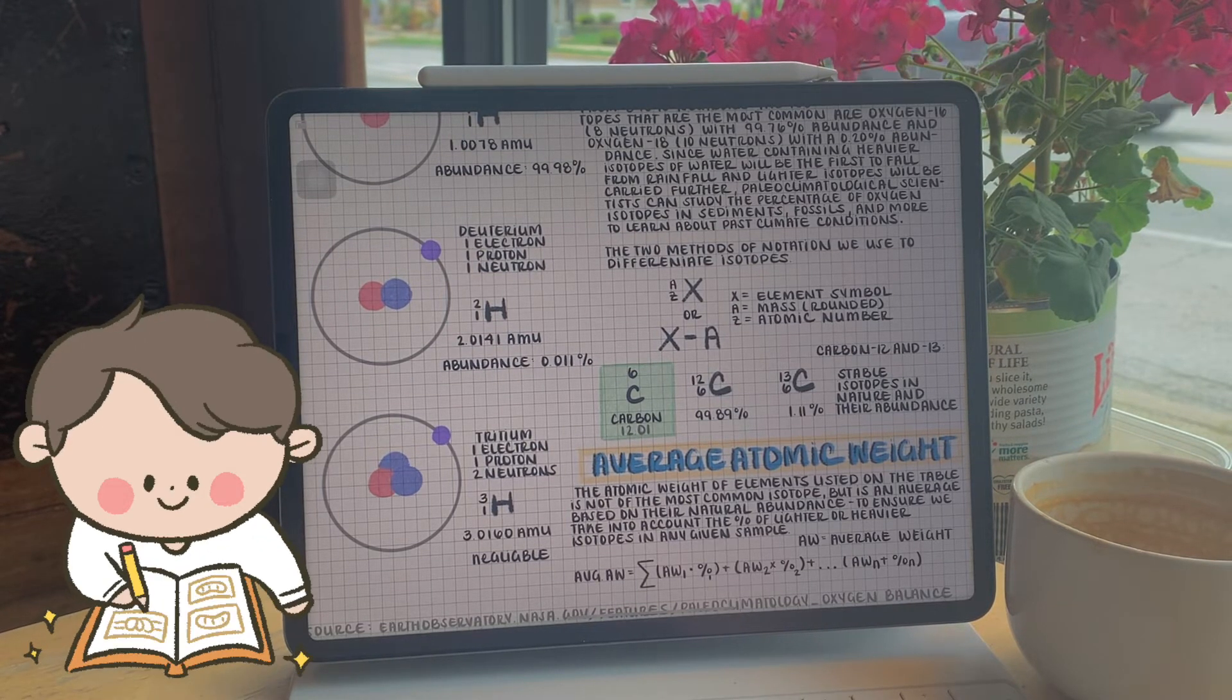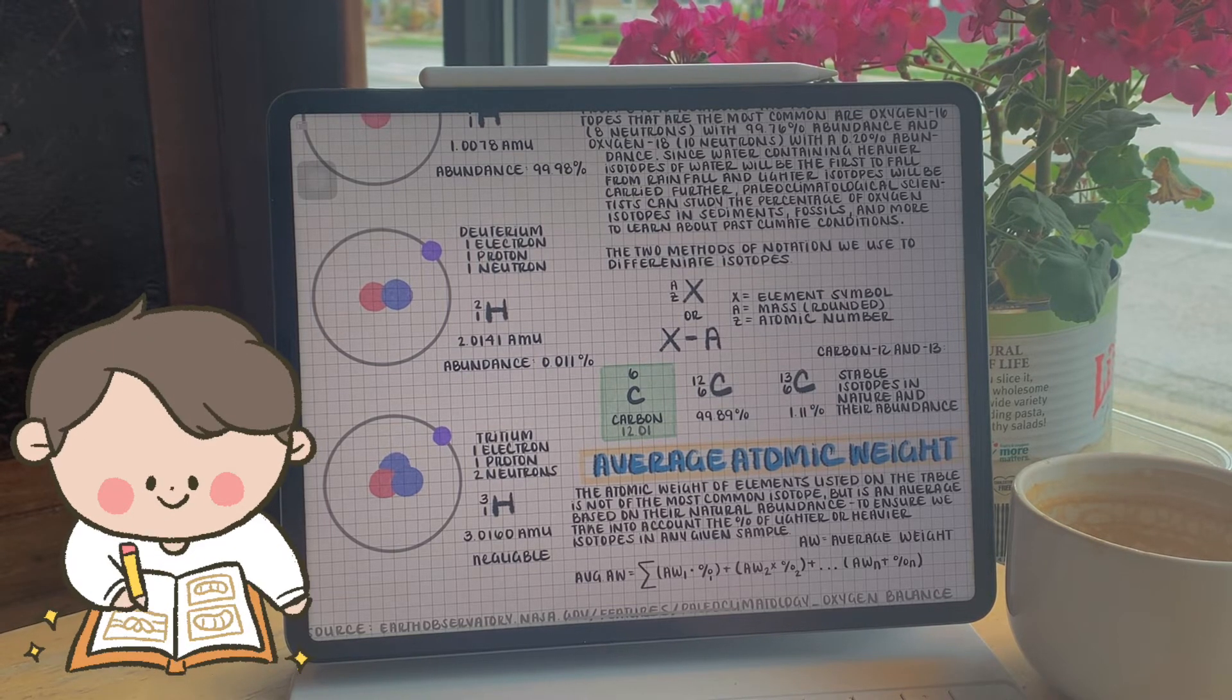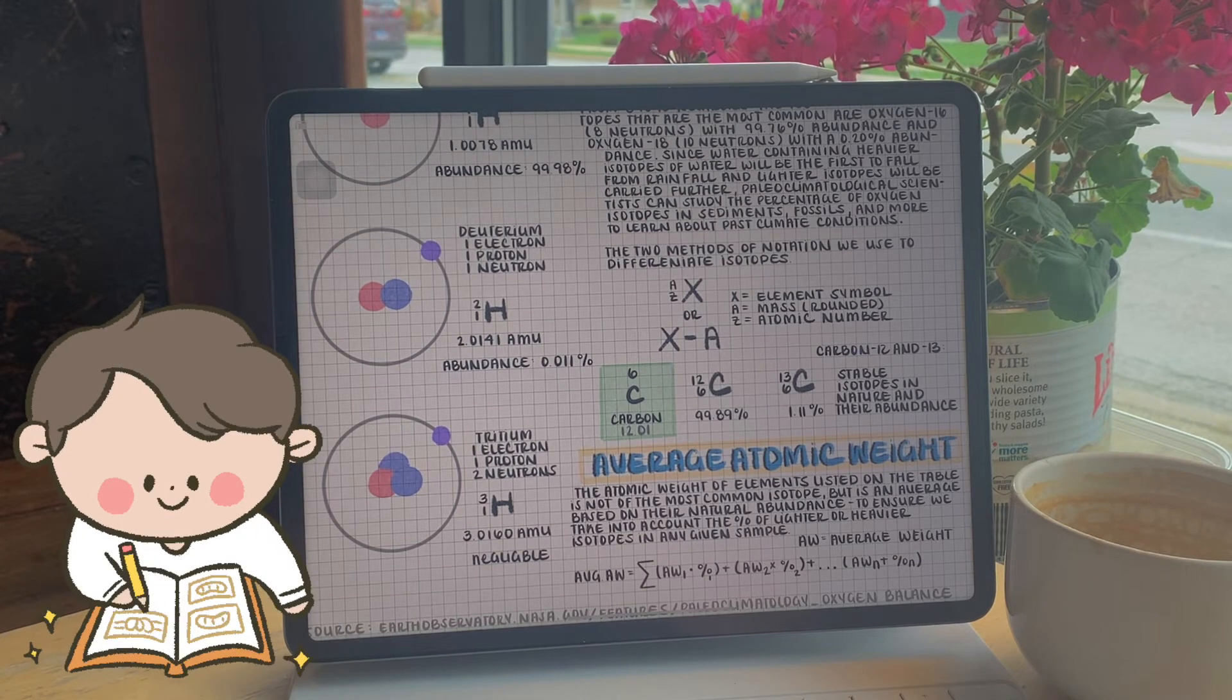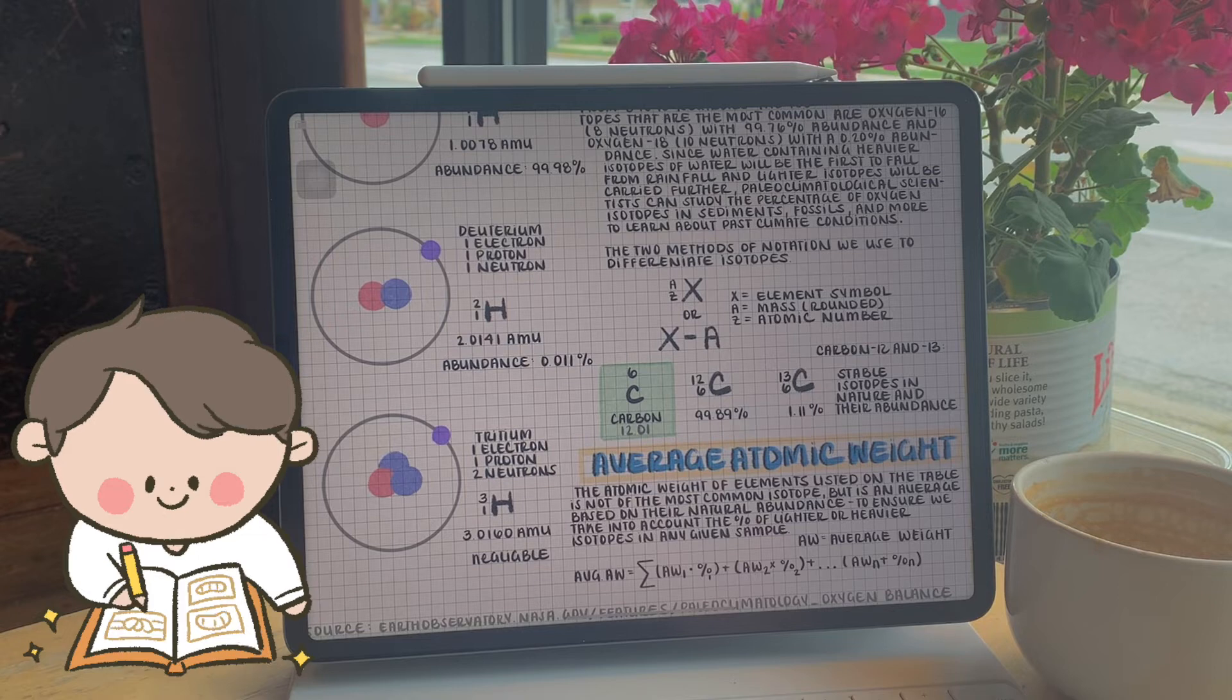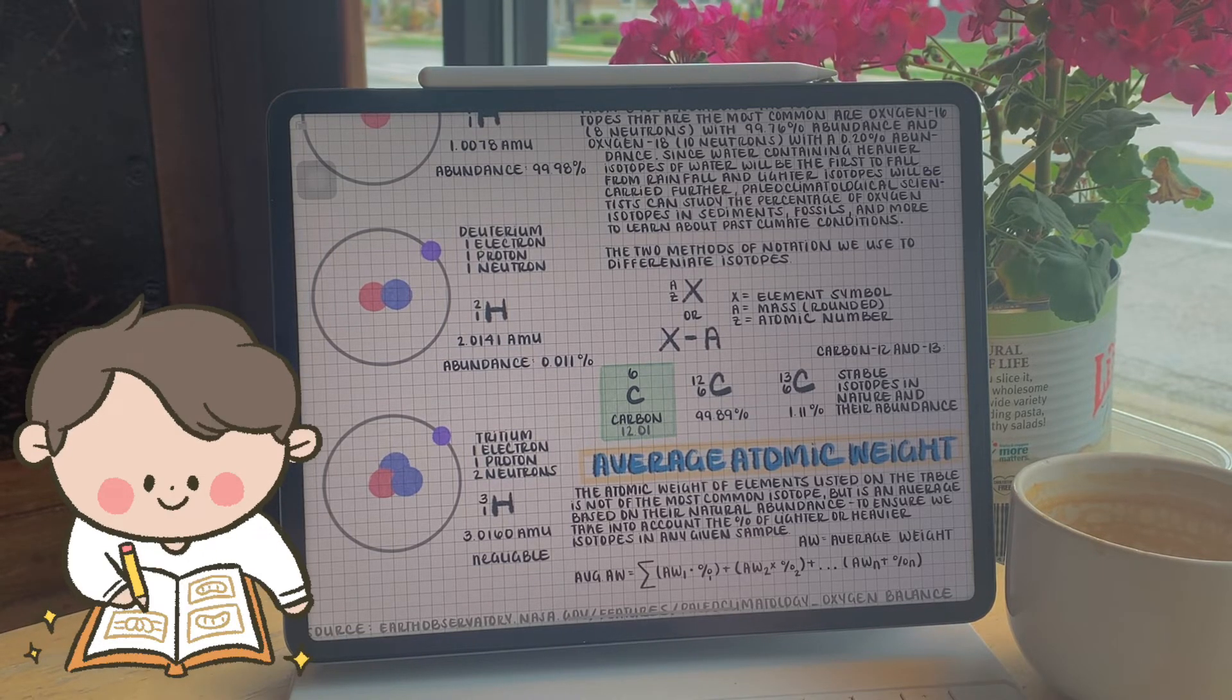A represents the mass. It's rounded to the nearest whole number for simplicity's sake. And Z. Z is the atomic number, or the number of protons in that specific isotope. The second notation just shows the elemental symbol and the atomic number.